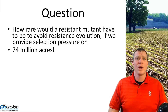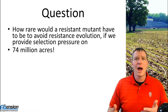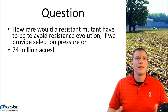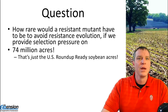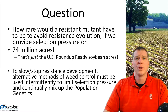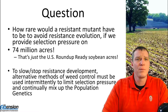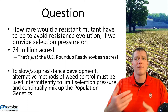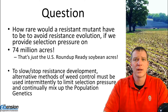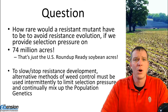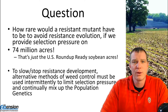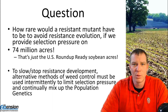The question then is: how rare would a resistant mutant have to be to avoid resistance evolution if we provide the same selection pressure on 74 million acres? That's really the experiment we've been running, because 74 million acres is just the amount of Roundup Ready soybean acres nationally. We have been using glyphosate repeatedly on those acres as a single source for too long, and that's why we're now seeing more and more glyphosate-resistant weeds.